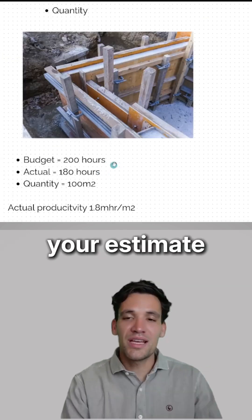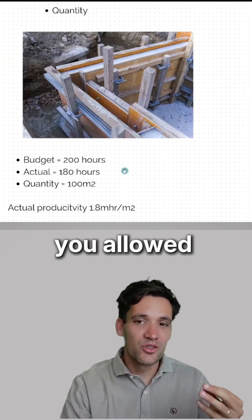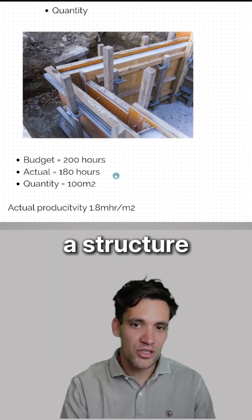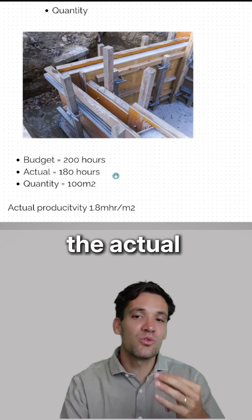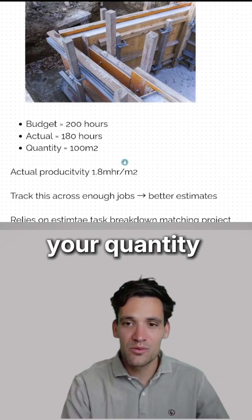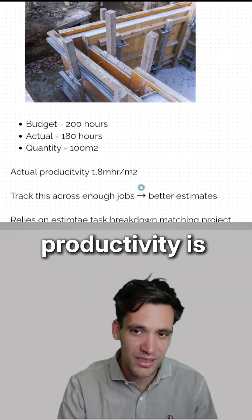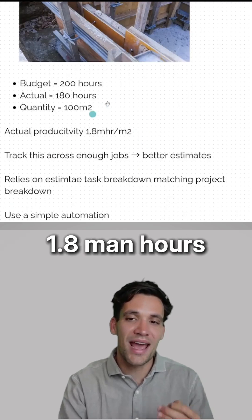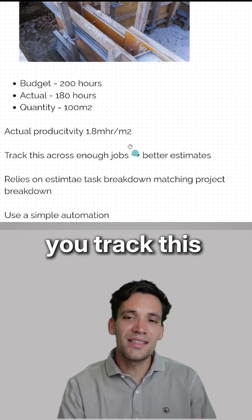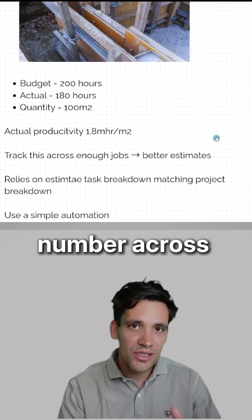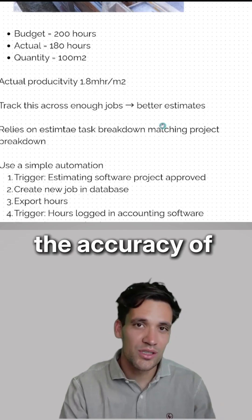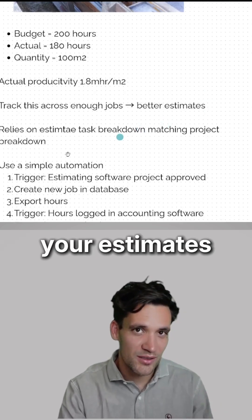Say for example from your estimate you allowed 200 man hours for the formwork or structure. The actual was 180 hours. Your quantity was 100 meters squared. Your actual productivity is 1.8 man hours per meter squared. You track this number across enough jobs, you'll improve the accuracy of your estimates.